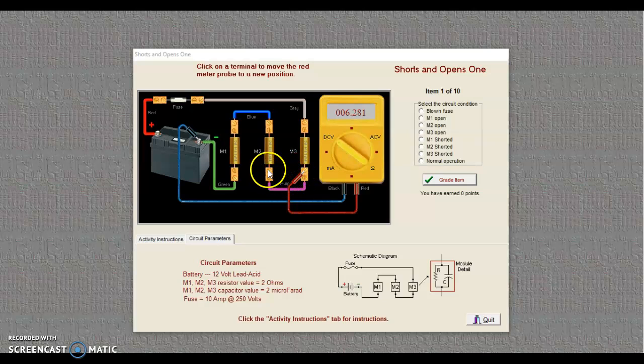So again, thinking about what's between the probes, right now module 1 and 2 are between the probes. Let's see if we can figure out which one is bad. So I'm going to come on this side of module 2. So only module 1 would be between the probes. And what that tells me is module 1, the only thing between the probes, is shorted because I now have 0 volts between my probes here.